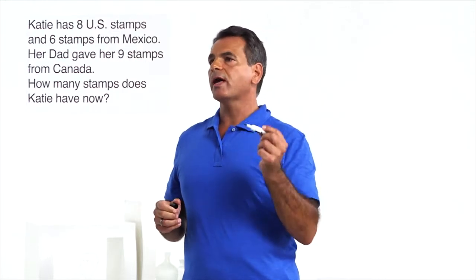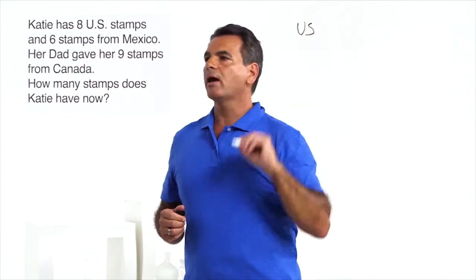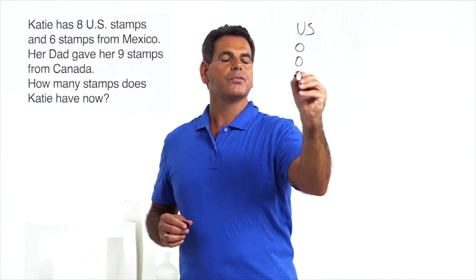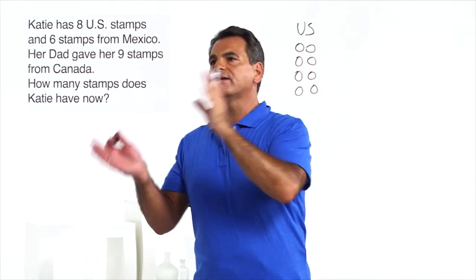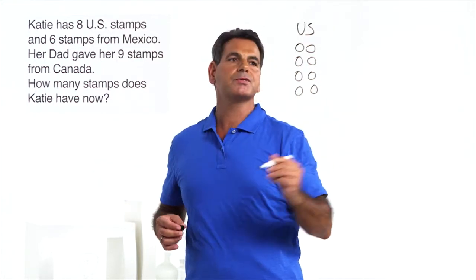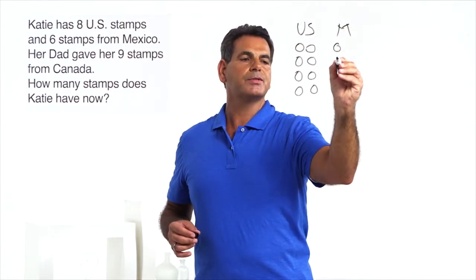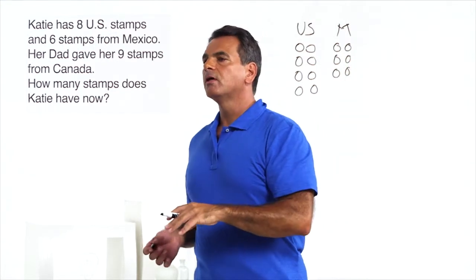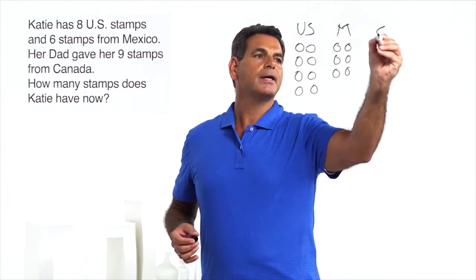Let's start with labeling. What kind of stamps do we have first? We have U.S. stamps — we have eight. Back into the problem: we have stamps from Mexico, we have six of them. Let's represent that with an M for Mexico and our six stamps. Back into the problem: her dad gave her nine stamps from Canada. Let's label that with a C for Canada, and we count out nine.